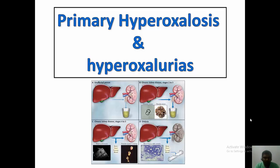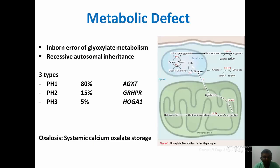Today I am here to talk about primary hyperoxalosis and hyperoxaluria. Hyperoxalosis can be of two types: primary or secondary. If it is an inborn error of metabolism, it is considered primary. Primary hyperoxaluria is an inborn error of glyoxylate metabolism and is a recessively inherited autosomal condition. It is mainly of three types.